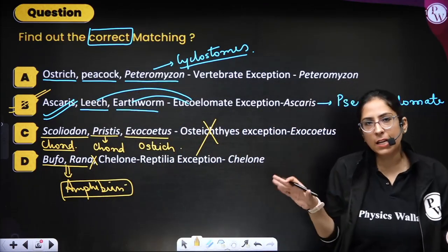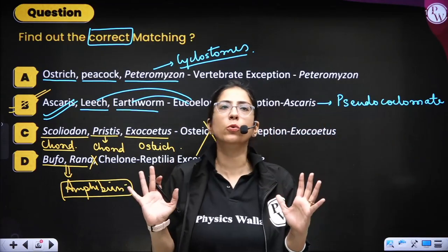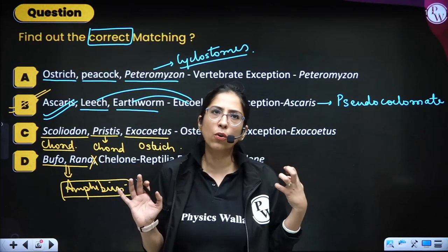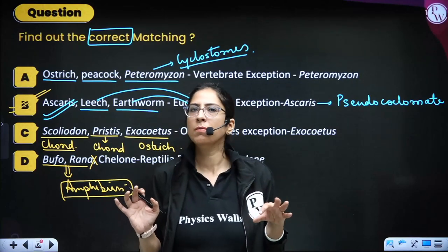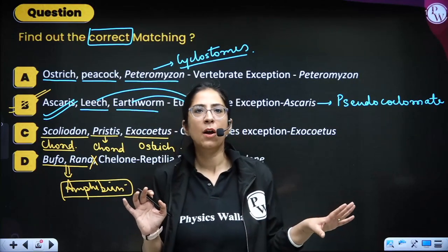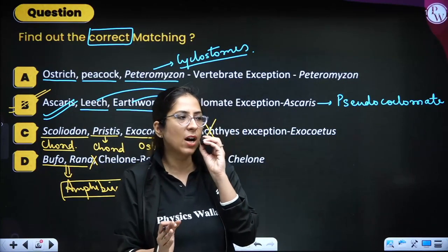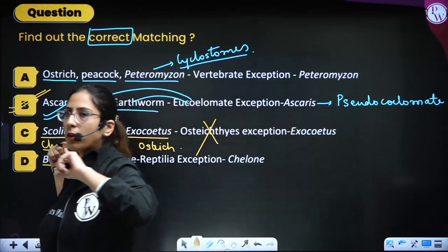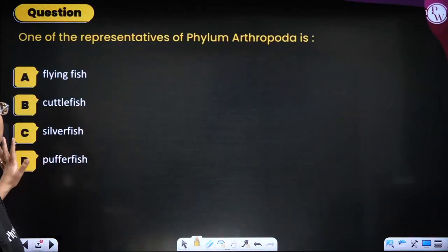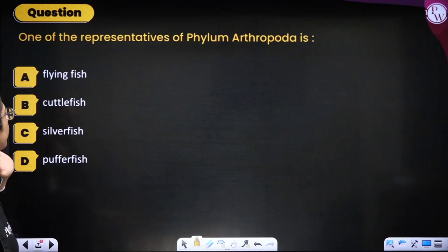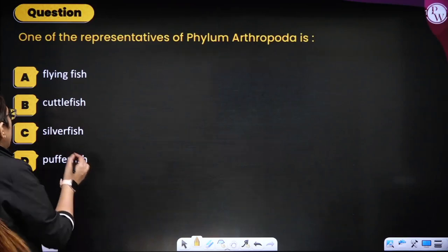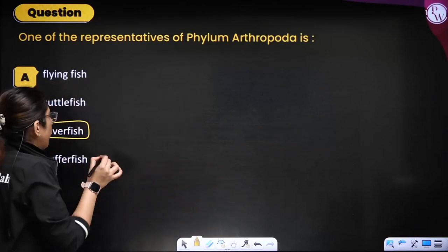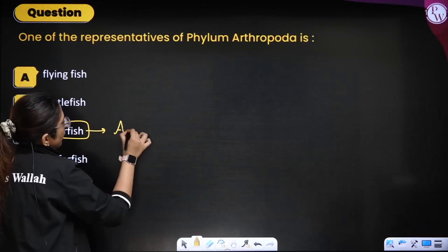If you want to practice more for Animal Kingdom — this chapter is huge. Completing it in two or three hours is not enough. At least practice all PYQs and start making short notes. Also remember: silver fish belongs to phylum Arthropoda, not an aquatic fish found in oceans.